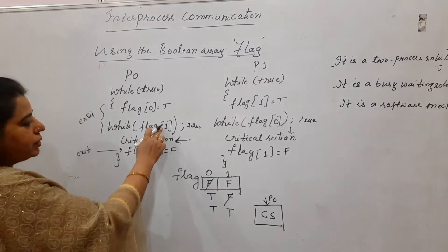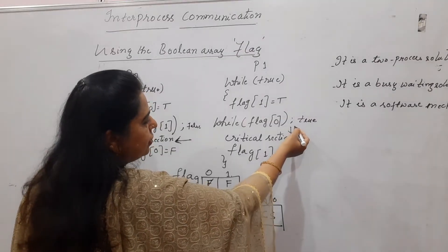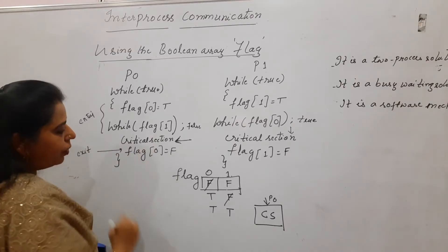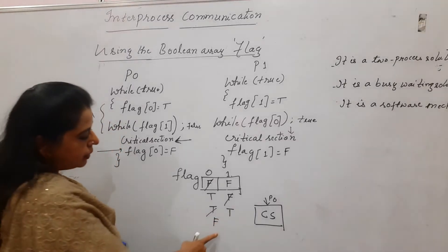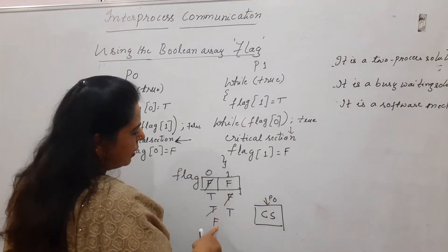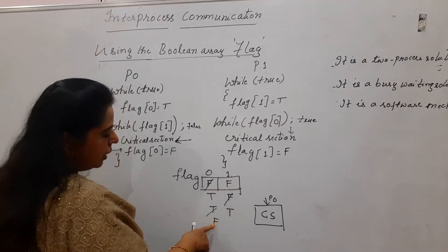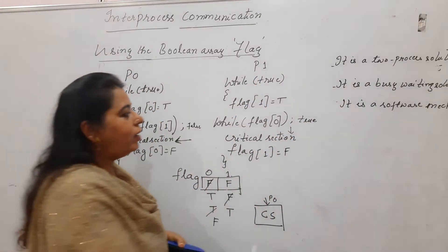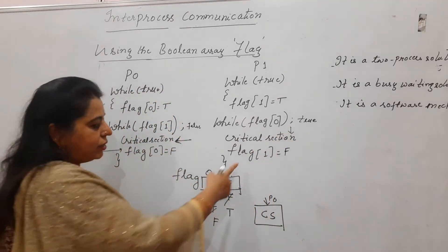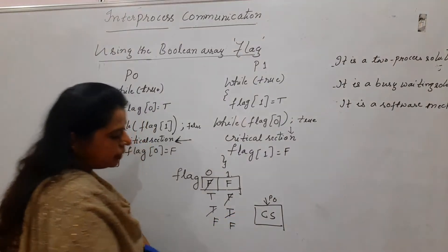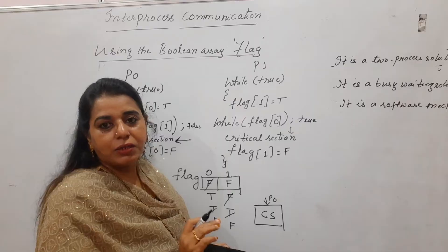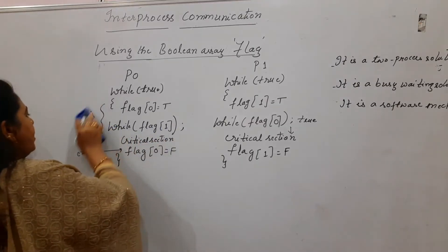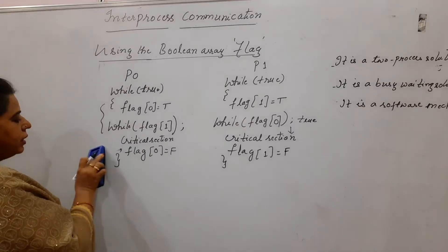Once P1 is stuck in the while loop, control goes back to P0. P0 completes its remaining code, comes out of the critical section, and sets its flag to F in the exit section. Once flag[0] becomes F, P1's while loop condition becomes false and it can enter the critical section. At the time of leaving, P1 will also set its flag to F. So yes, this solution satisfies mutual exclusion.